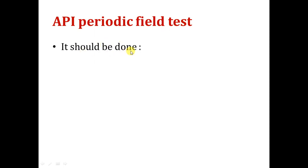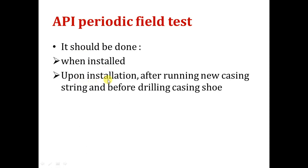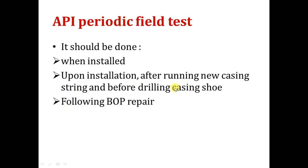The API Periodic Field Test should be done: number one, when installed or when you rig up the BOP. Number two, after installation — after running a new casing string and before drilling the casing shoe, you should make a pressure test. Number three, because at this time you will change the rams, you have to make a pressure test. Number four, following any BOP repair — we will talk about this in more detail shortly. Maximum interval: three weeks, as I told you.